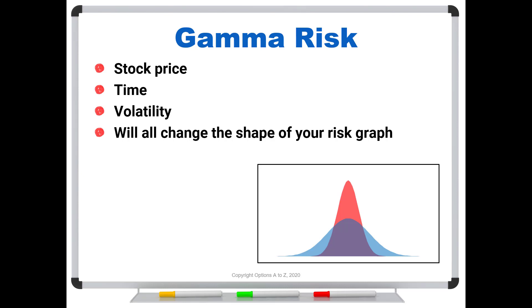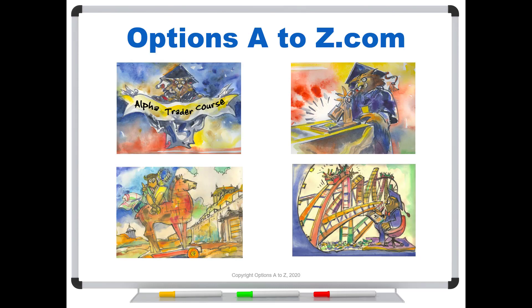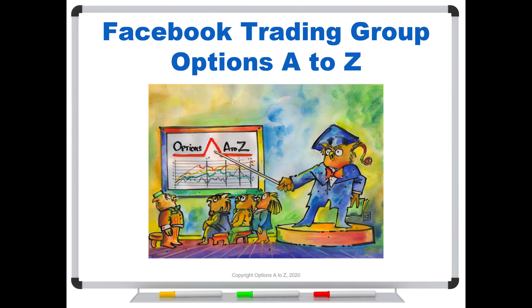Now, if you're not familiar with how these changes occur, or why, or how it's going to affect your positions, that's where you'd want to check out the art and science of options trading. So please check out the AlphaTrader course Strategy Lab at OptionsAtoZ.com. You can also please join us on the Facebook trading group, OptionsAtoZ, and you can find a link in the description below.